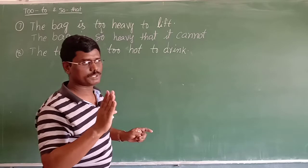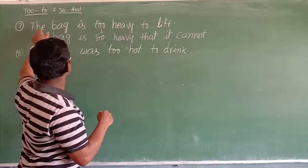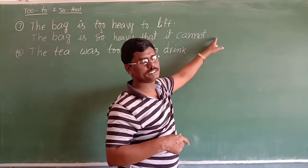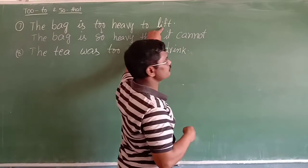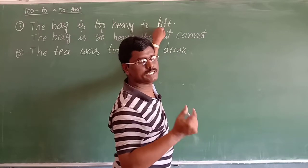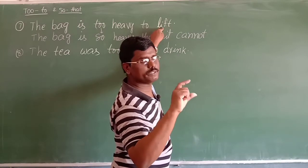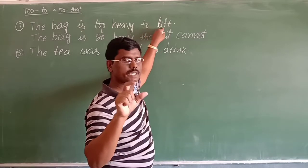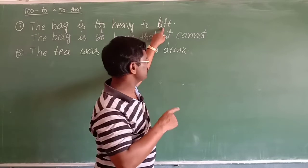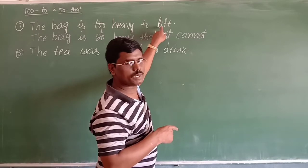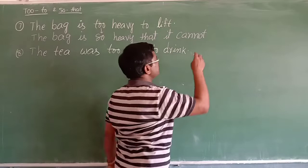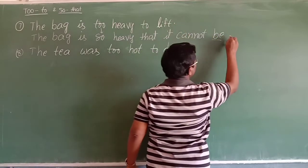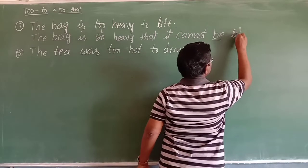Very, very important rule: when the subject is a thing, we use passive voice. 'Lift' (verb 1) becomes 'be lifted' (be + verb 3). So the complete answer is: 'The bag is so heavy that it cannot be lifted.' Remember: when the subject is a thing, we must write passive voice — be + verb 3.